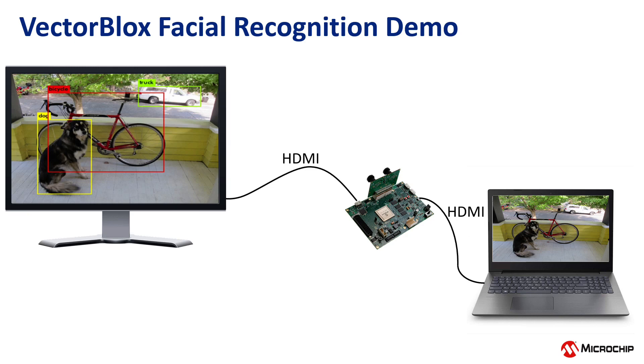Note that the source has the original video, and after processing by the Core Vector Blocks IP, bounding boxes and labels are overlaid.